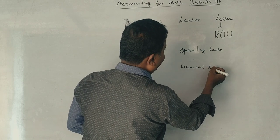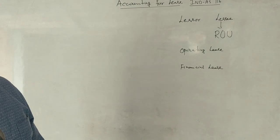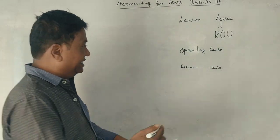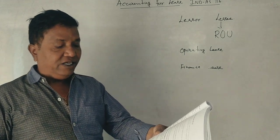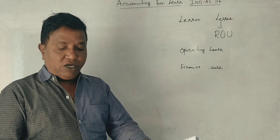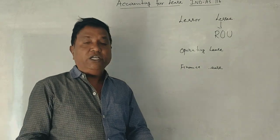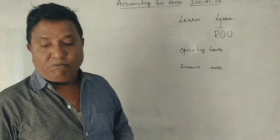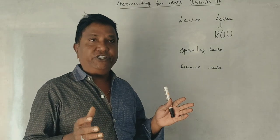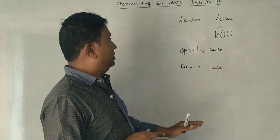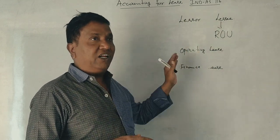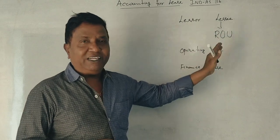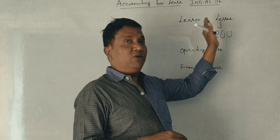Now, what is an operating lease? An operating lease is a lease that does not transfer substantially all the risks and rewards incidental to ownership of an asset. The lessor does not transfer complete ownership — substantially all the risks and rewards are not transferred to the lessee.